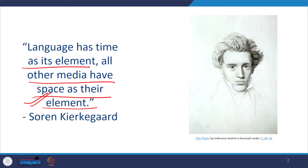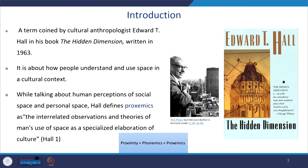The word proxemics comes from proximity — meaning closeness or nearness. This term was coined by cultural anthropologist Edward T. Hall. One of his famous books is The Silent Language. In his famous book The Hidden Dimension, written in 1963, he made mention of this term proxemics.